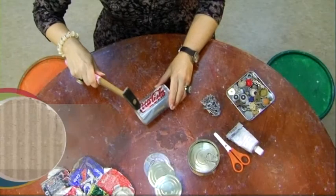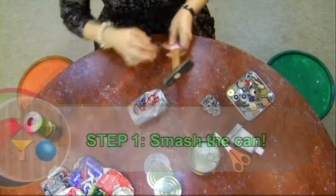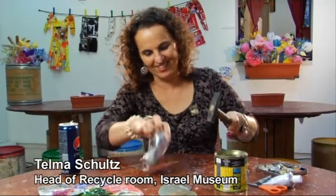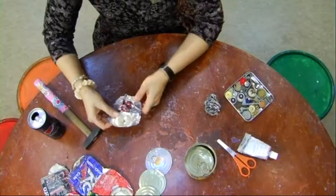The first thing you're going to do is smash and flatten the can. That's fun, but I suggest you try to find a can that has already been flattened by a car because it looks much better.